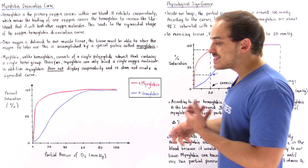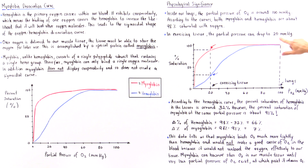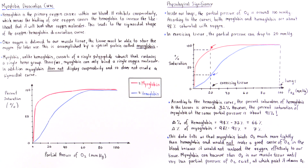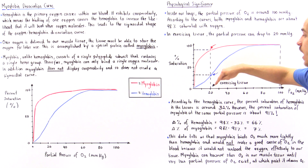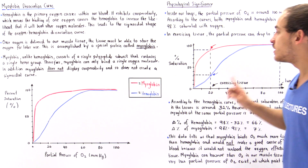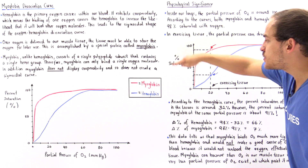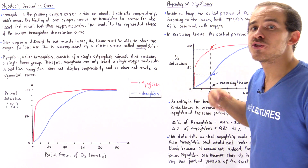The important point is this: when our tissue is exercising, its partial pressure of oxygen can drop to as low as 20 millimeters of mercury. If we draw a straight vertical line upward at 20 mmHg and check the corresponding Y-values for both curves, this is where the difference actually lies. For the case of hemoglobin, at 20 mmHg, the percent saturation is equal to about 32%.